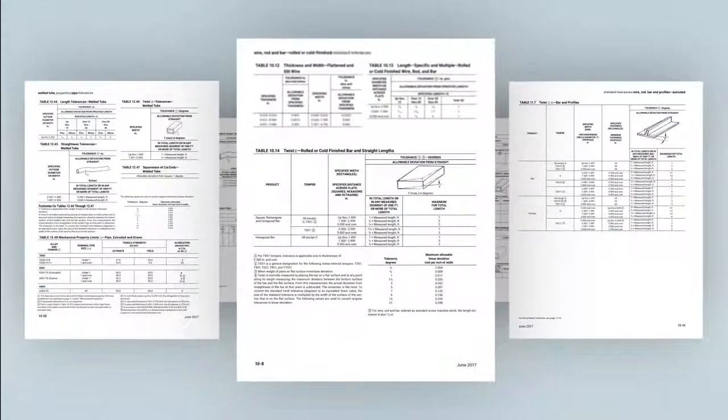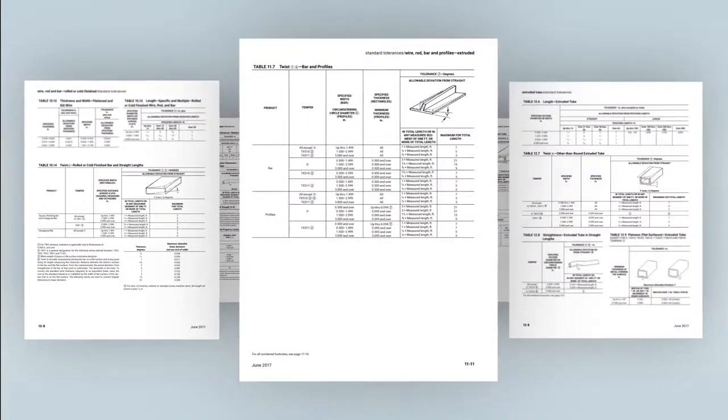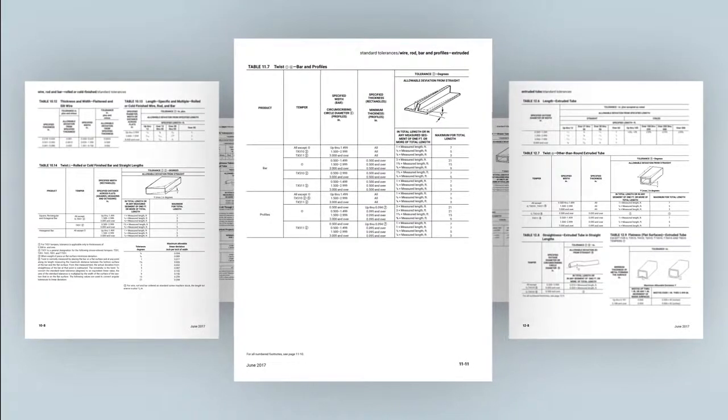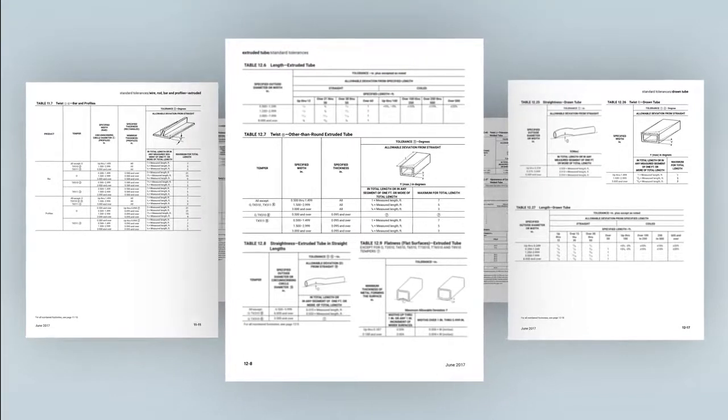Aluminum Standards and Data has multiple tables for twist tolerances that depends on the product form, such as extruded profiles or bar or cold finish bar.